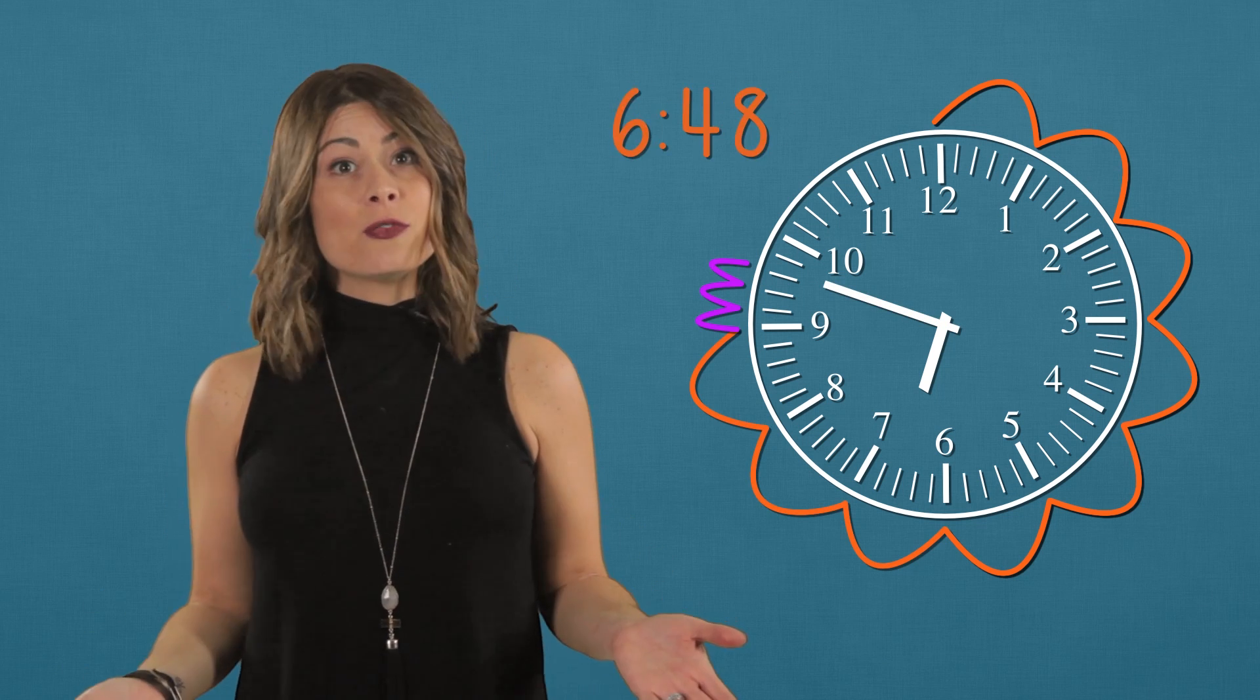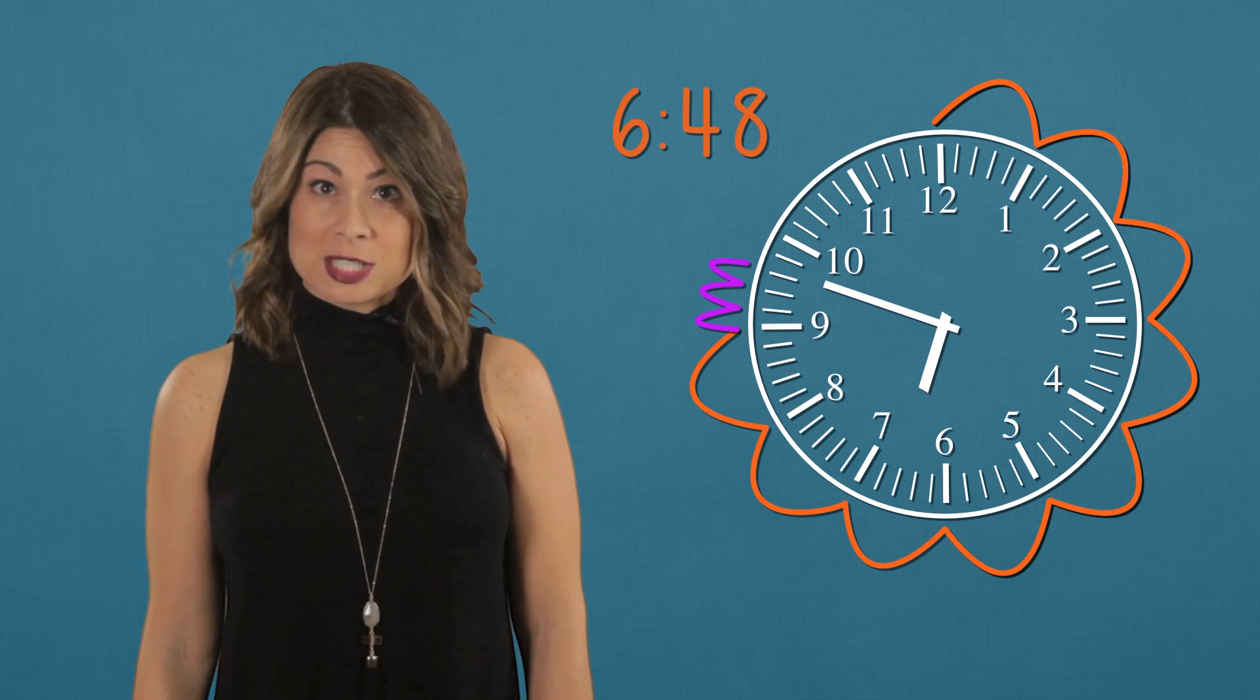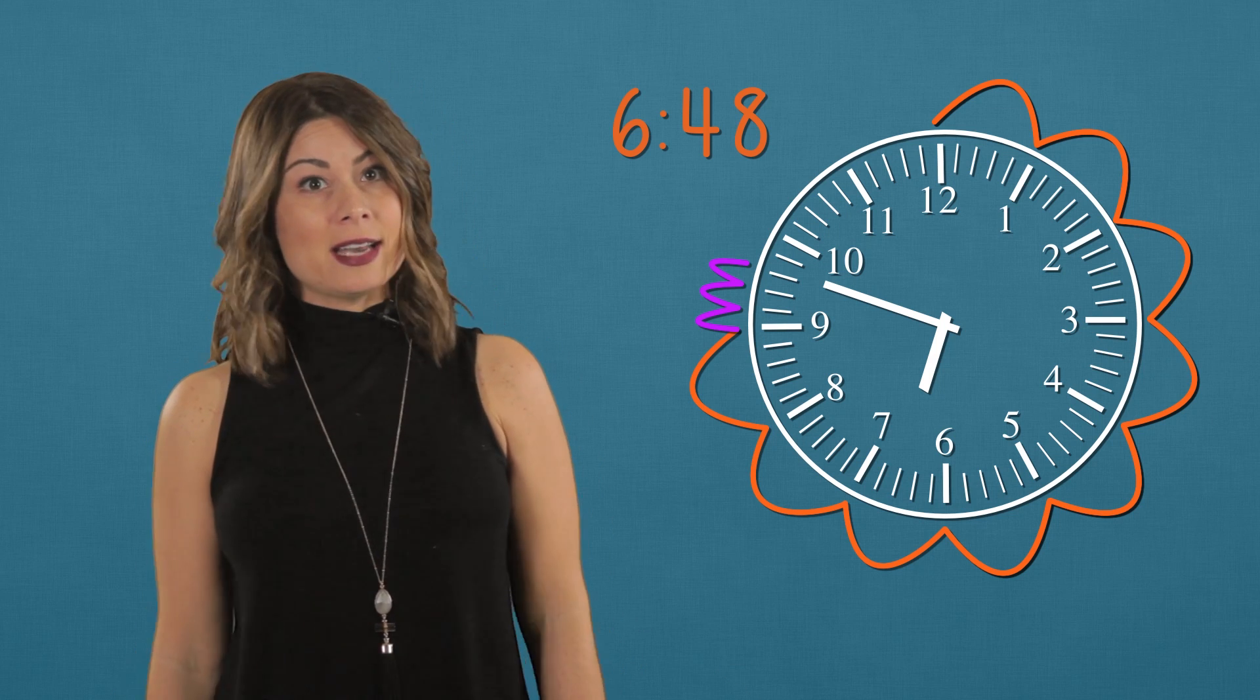For hours, we count by ones on the large tick marks. So that's one, two, three, four, five, six. It's not quite to the seven yet. So that's six hours and 48 minutes, 6:48 a.m. That's pretty early. No wonder I need a nap. While I catch up on some sleep, why don't you see if you can tell what time is shown on this clock. Great job today.